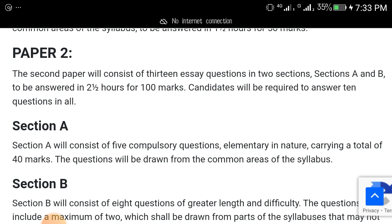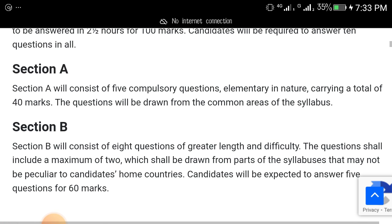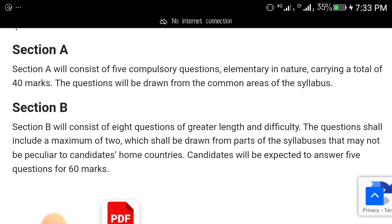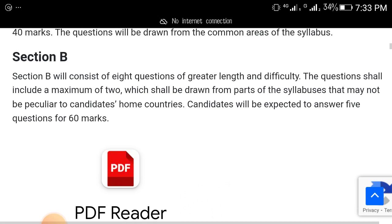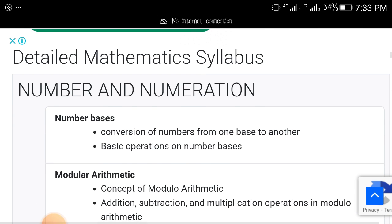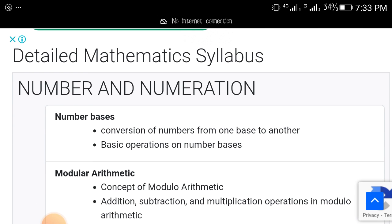But then when it comes to paper two, it is theory. The paper will consist of 13 essay questions in two sections, section A and section B. It will carry 100 marks. Section A will consist of five compulsory questions. Section B will consist of eight questions of greater length and difficulty, but you will choose the ones to answer.